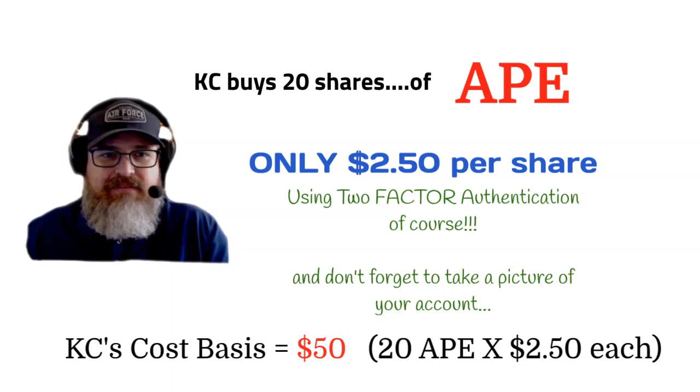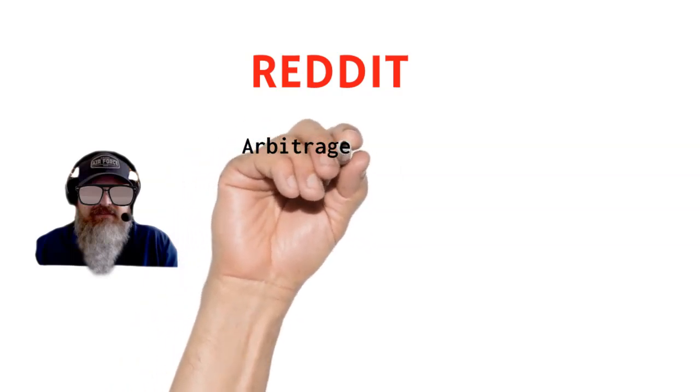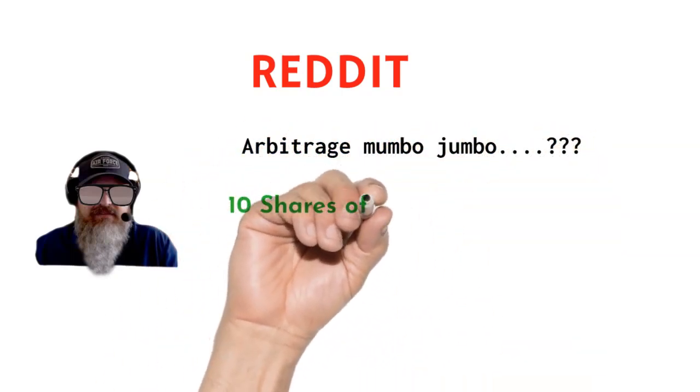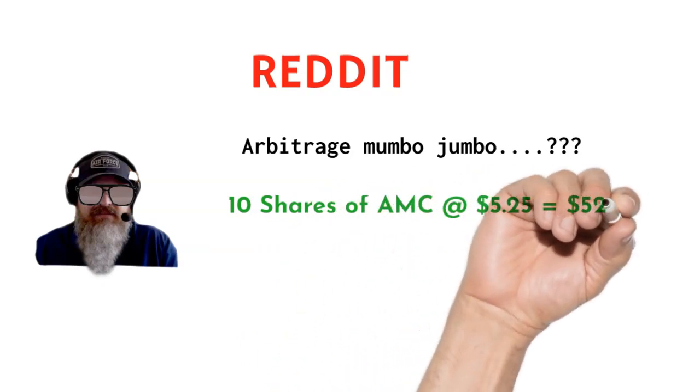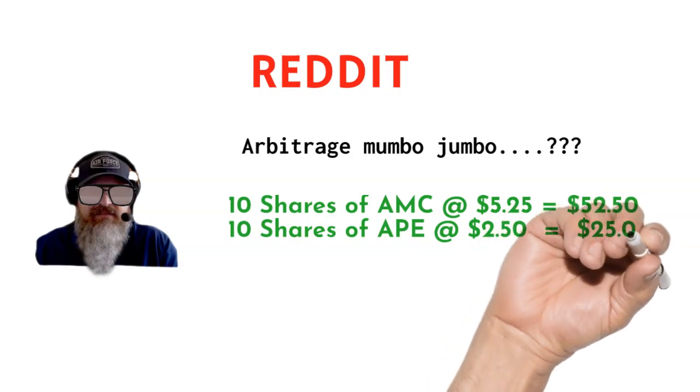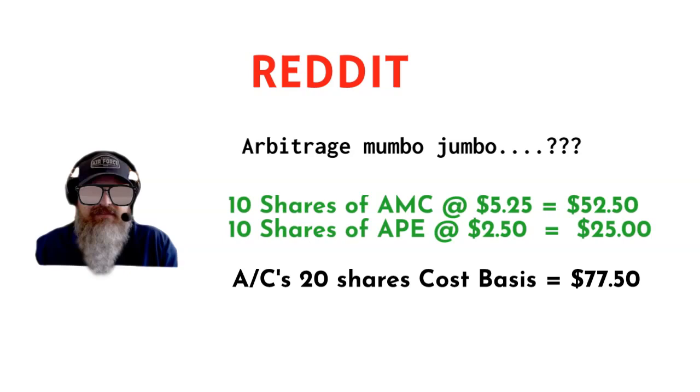Lastly, this brings us to AC. AC that same Friday morning happened to stumble onto a Reddit site and reads a whole bunch of mumbo-jumbo about arbitrage and Ape versus AMC and on and on. Not being convinced one way or the other, AC decides to just split the difference and he logs into his trading account and buys 10 shares of AMC at $5.25 and 10 shares of Ape at $2.50 apiece. His trading platform does the math for both and it shows his cost basis for these 20 shares at $77.50.